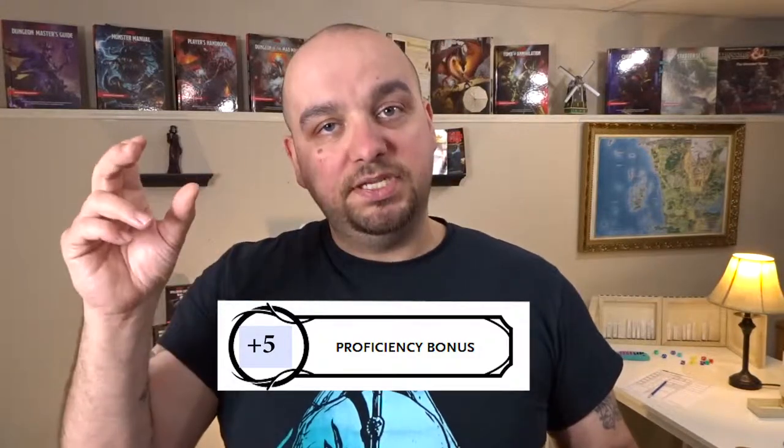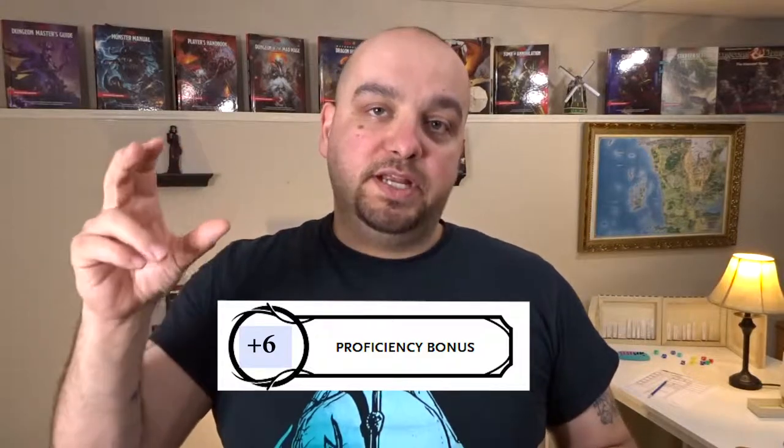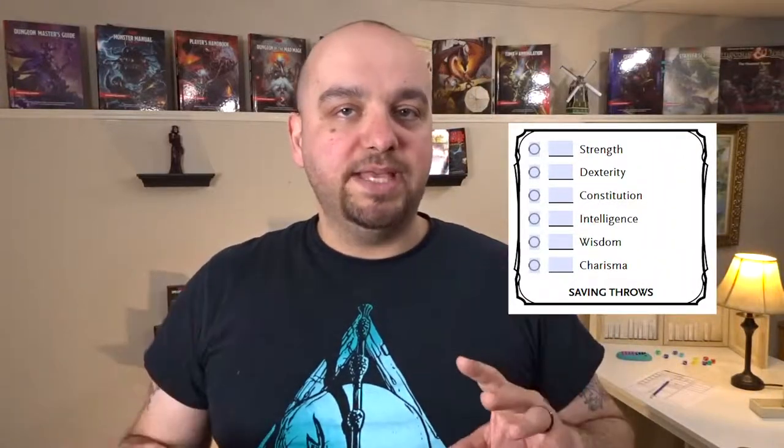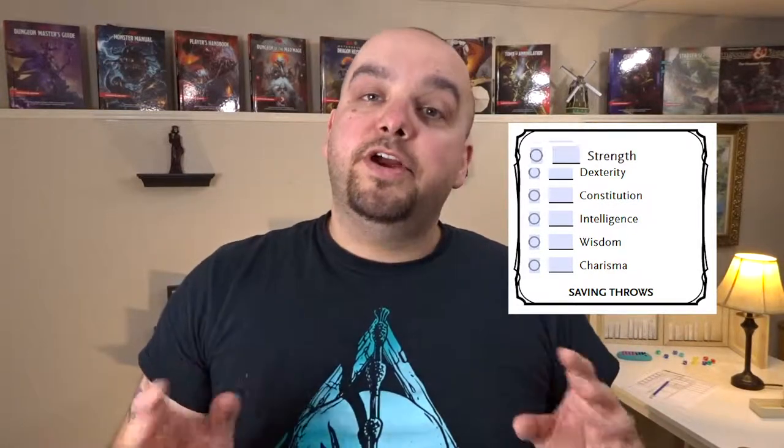Your proficiency bonus can be found in the proficiency bonus column of the class table for the class you chose. Next we have saving throws. Saving throws are made to counteract the effects of different types of magic, attacks, or poisons. You roll a d20 and add the bonus beside the particular type of saving throw. You'll get to choose two saving throw proficiencies defined by your class — shade in those bubbles. So if your base bonus is plus two and your proficiency is plus two, you'll get a plus four on that saving throw type.